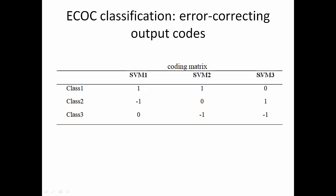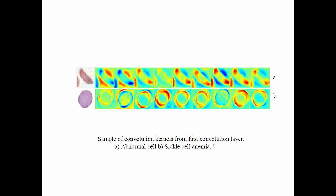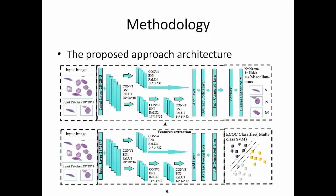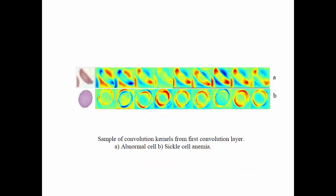Here is the output of the first convolutional layer: the activation or the kernels of the first convolutional layer. The first one for the sickle shape as you see here. The main difference between them is the shape, so basically our model is based on the shape to distinguish between sickle cells, normal, and other diseases.